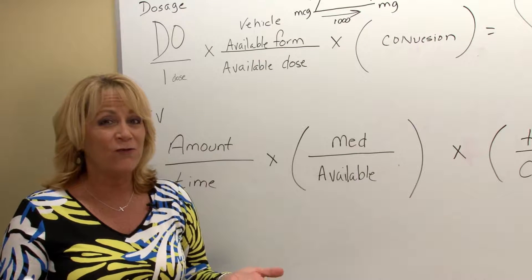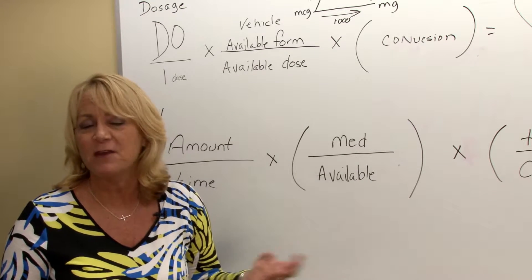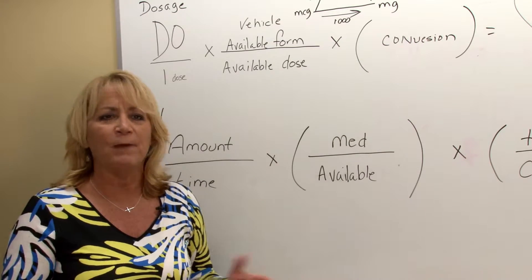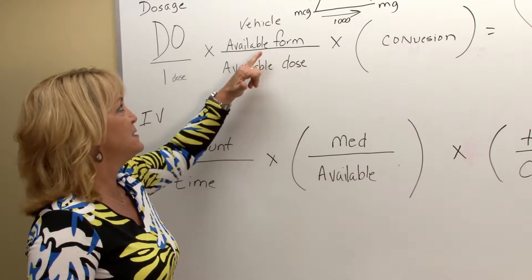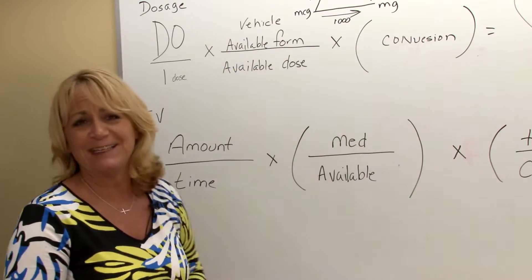But if I only have a four-seater sedan, I'm going to have to take at least two or one and a half. And if I have one of those little smart cars that only takes two, we're going to need three of them. So that's what we're looking at here. What is the vehicle? And then in each vehicle, how much medication is in each?